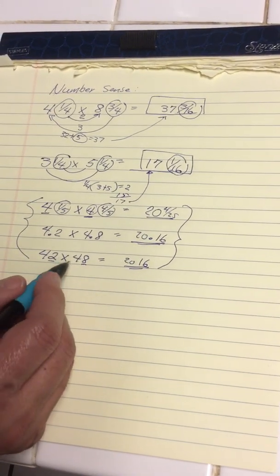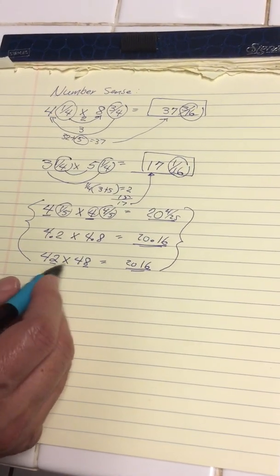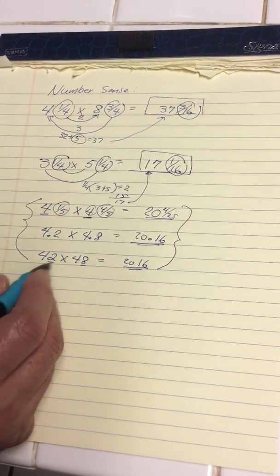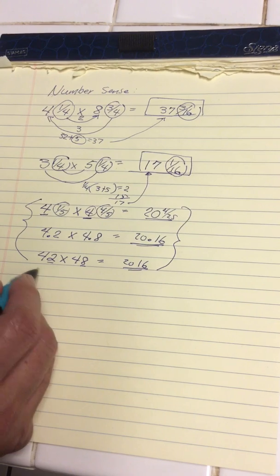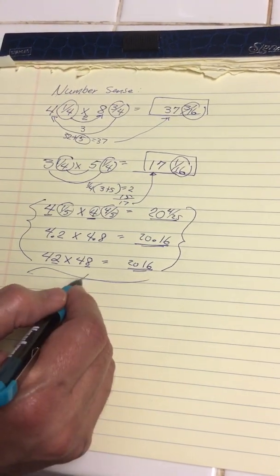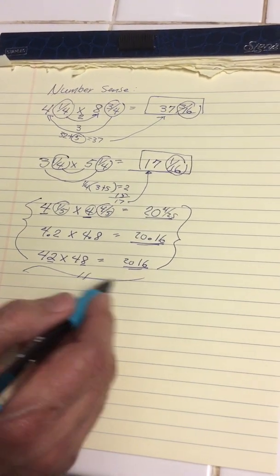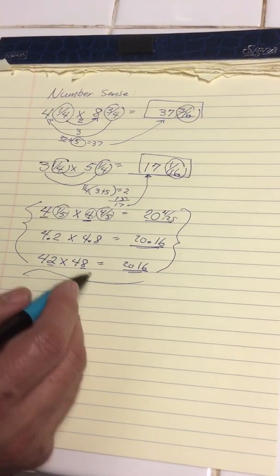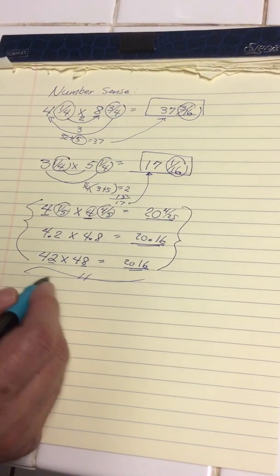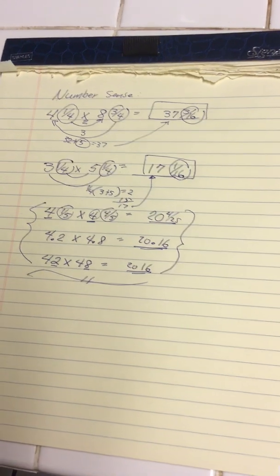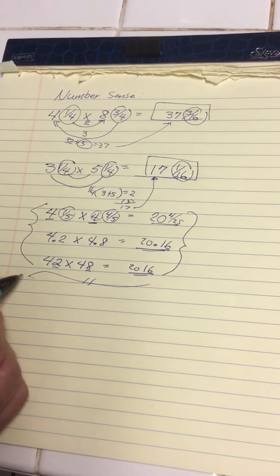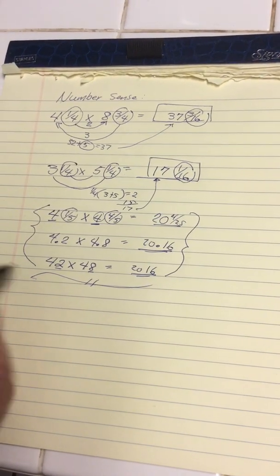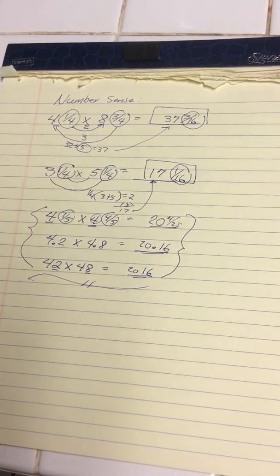These examples are all very similar to each other. That's today's lesson for mental math — number sense, UIL number sense, or TMSA number sense. That's it for today, thank you.